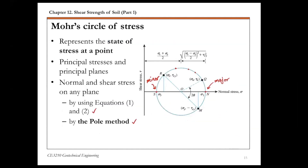The next focus is the pole method, a graphical method that uses Mohr's circle to find normal and shear stresses on any plane. There are two steps involved in this method.